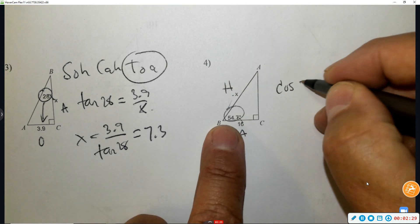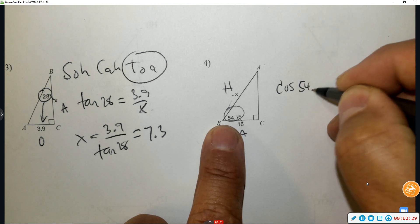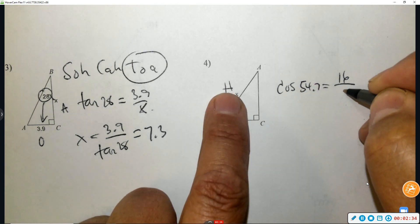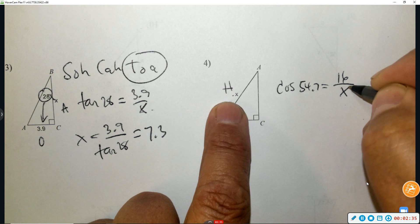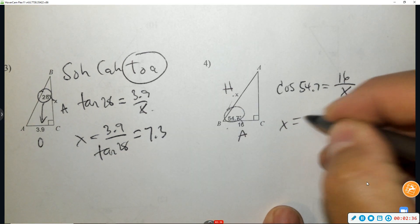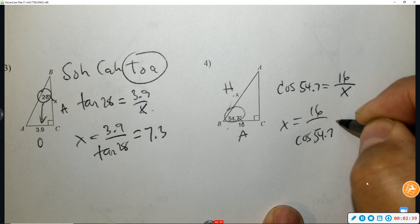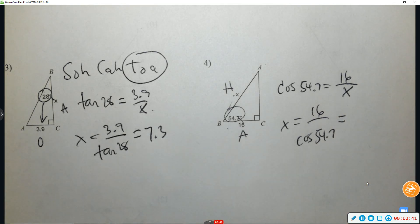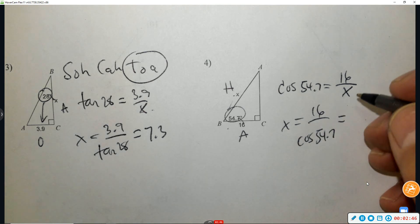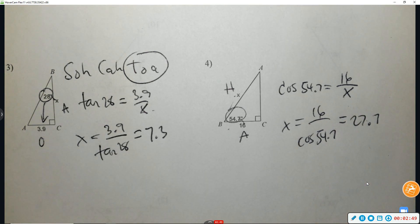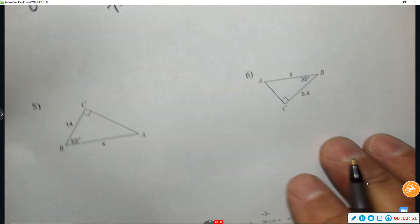Number four: circle the angle — 16 is adjacent and x is the hypotenuse. That's cosine of 54.7, with adjacent 16 over x. Trade places and use your calculator. If you round properly, you get 27.7.